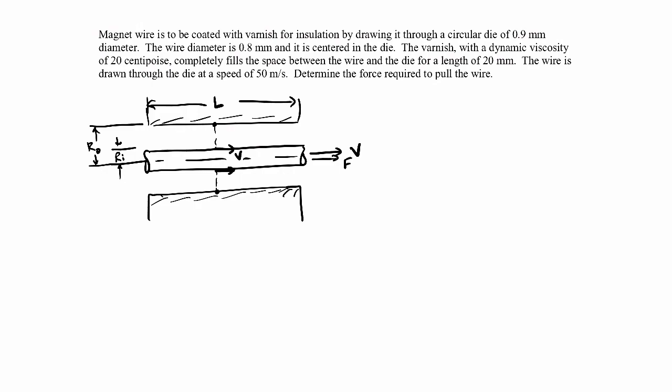Since the gap is pretty small — the die diameter is 0.9 millimeters and the wire diameter is 0.8 millimeters — we're going to make the assumption that the velocity profile in here is linear. This is called a Couette flow approximation. A Couette flow is a velocity profile that is linear, with no pressure gradients driving the flow; it's just the movement of the boundary through the no-slip condition that drives the flow, so the velocity profile is linear.